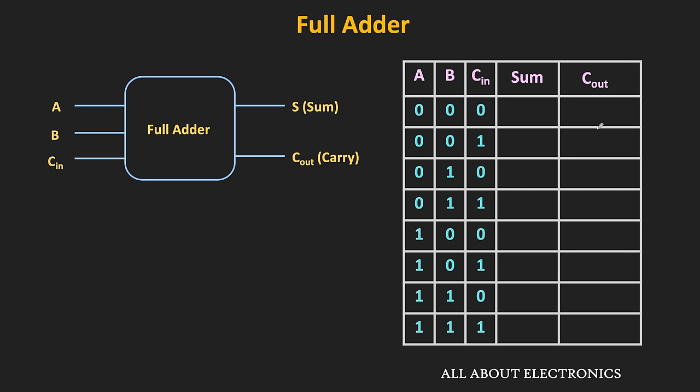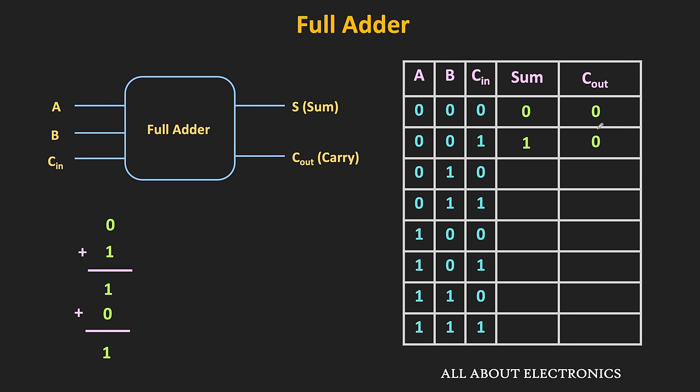For three inputs we have a total of eight different combinations. In the first row, 0 plus 0 plus 0 is equal to 0, so the sum is 0 and the carry bit is 0. In the second row, the sum is equal to 1 and the carry bit is equal to 0. In the third row, 0 plus 1 is equal to 1, and then 1 plus 0 is equal to 1, so the sum is 1 and the carry is 0. In the fourth row, 0 plus 1 is equal to 1, and 1 plus 1 is equal to 0 with 1 as carry.